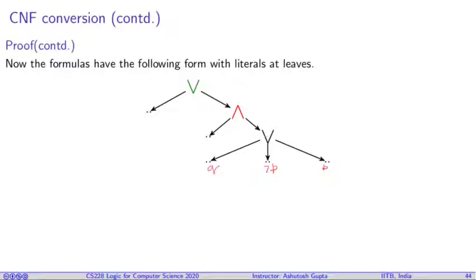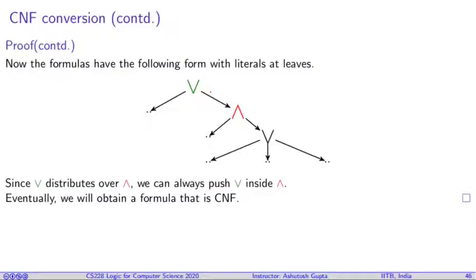Now, the problem is why this formula is not in CNF, because there is a disjunction here, which is sitting above a conjunction, which we don't like. What we can do, we can apply distributivity property, where the disjunction distributes over conjunction, and we apply the disjunction and reverse the order of conjunction and disjunction. Therefore, we will obtain a CNF formula.